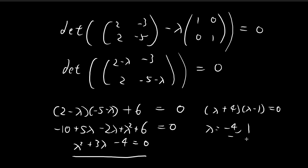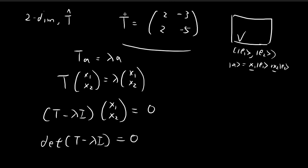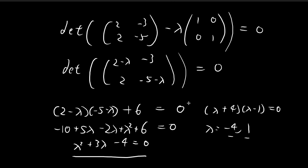So these are the two possibilities. For this matrix, we have found the corresponding eigenvalues: lambda equals -4 and lambda equals 1.